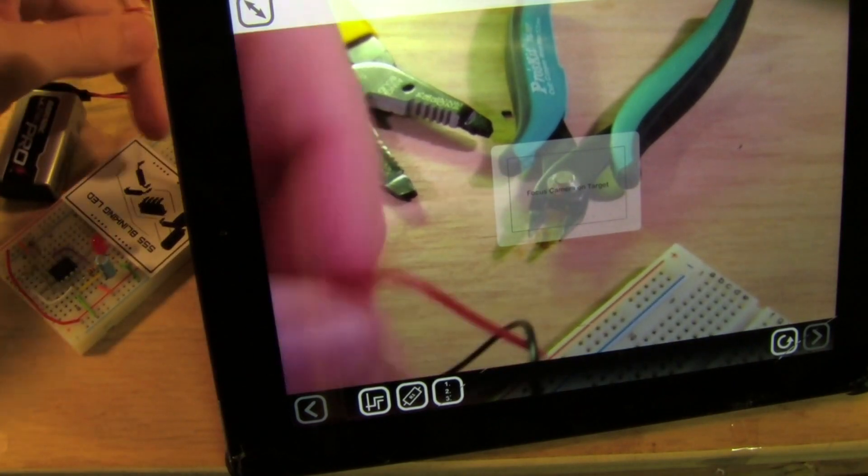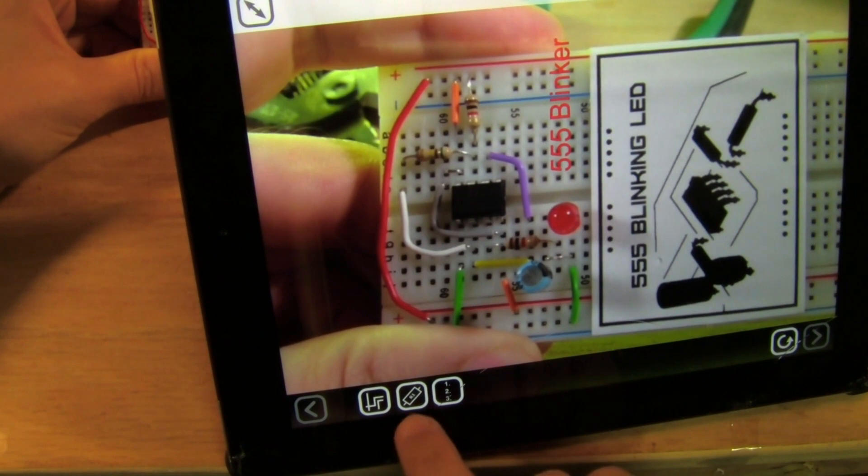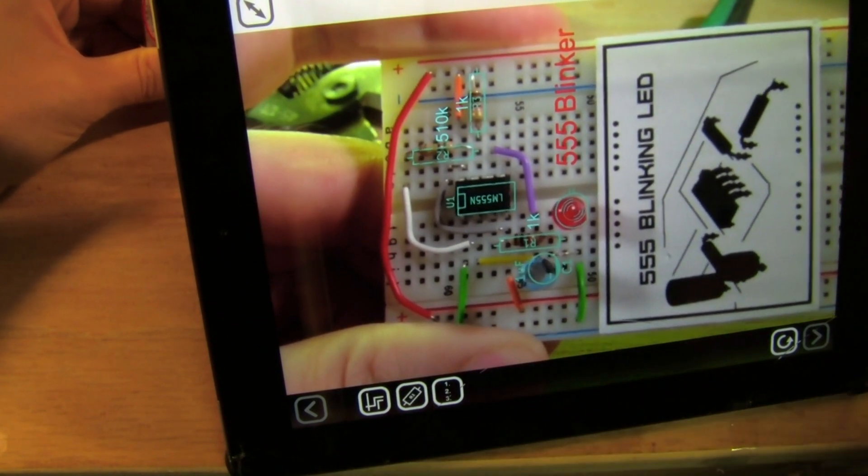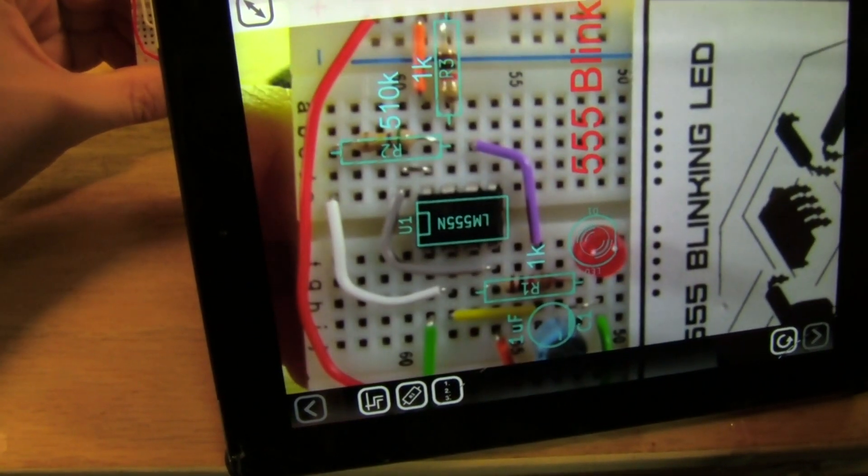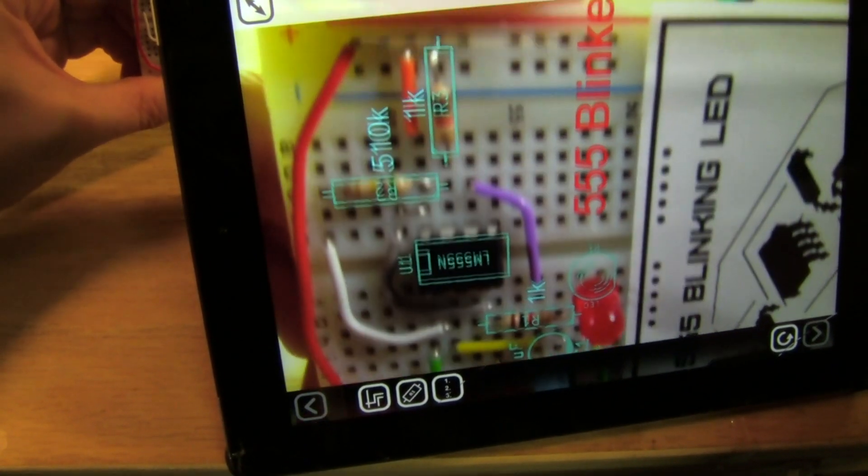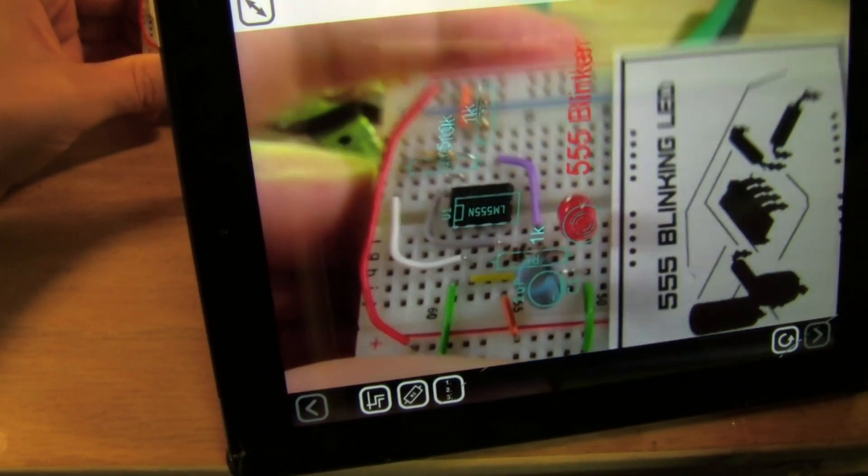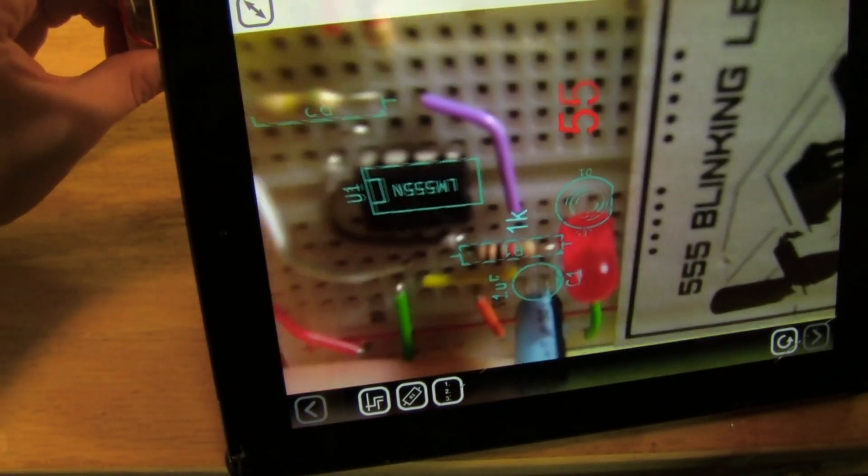Let me unplug it for now. One thing you can do after the circuit is made is overlay part information. So here I can see that's a 555 reference U1, 510K R3, and you can kind of tell the polarity on the capacitor and the LED too if you look carefully.